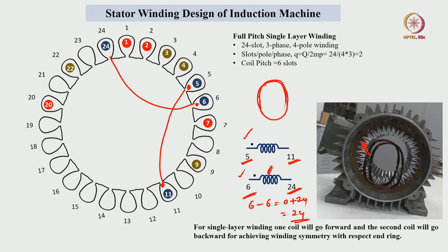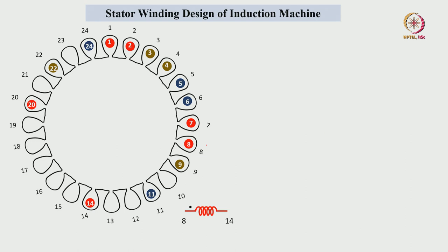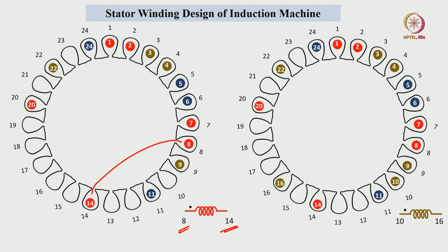The 7th slot is already filled, so the next coil fills the 8th slot and 14th slot — 8 plus 6 equals 14. The 9th slot is already filled, so we fill the 10th slot next. 10 plus 6 equals 16, so the 10th and 16th slots are filled with the next coil. This coil has two terminals: one at the 10th slot as the starting point and one at the 16th slot as the ending point.